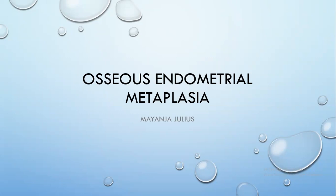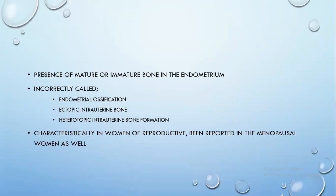Osseous endometrial metaplasia is the presence of mature or immature bone in the endometrium. It has been incorrectly called endometrial ossification, ectopic intrauterine bone, and heterotopic intrauterine bone formation. It is more commonly seen in women of reproductive age, though it has also been reported in menopausal women, as we shall see later in this presentation.